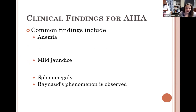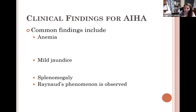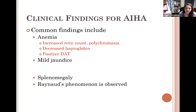Clinical findings of autoimmune hemolytic anemia: the patient will have anemia because the spleen is removing those cells. They'll have mild jaundice due to increased cell lysis, enlarged spleen due to sequestering of cells, and Raynaud's phenomenon — where as blood travels to the extremities away from the core and cools, cold antibodies are able to attach to those red cells. Common anemia findings include increased reticulocytes, increased polychromasia, decreased haptoglobin, and a positive DAT.